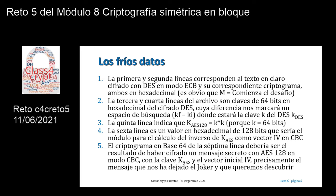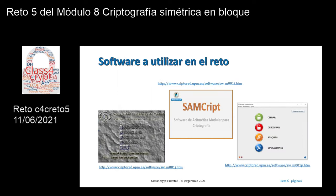Y precisamente sería el mensaje que nos ha dejado Joker y que queremos descubrir. ¿Software a utilizar en este reto? Primeramente usaremos el software SaveDesk, software de ataque a la fortaleza de los estándares. A continuación habrá que utilizar el software JumpKit, software de aritmética modular para criptografía, y por último el software AESphere para cifrar y descifrar textos o criptogramas en el algoritmo AES. Ahí tenéis las URL de descarga y todo el software es de tipo Freeware.